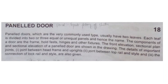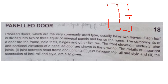So what is a paneled door? Paneled doors, which are very commonly used types, usually have two leaves. You would have seen many different types of doors - a door with two leaves and a door with four leaves. In older days, doors with four leaves and two leaves were very common. Each leaf will be divided into two or three equal or unequal panels. This is called a paneled door.